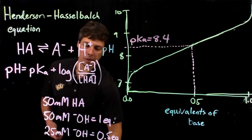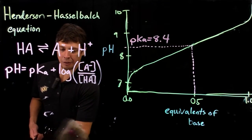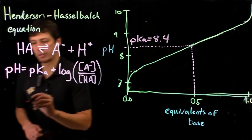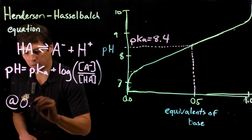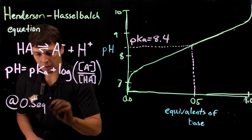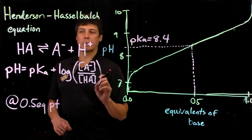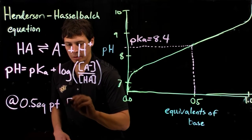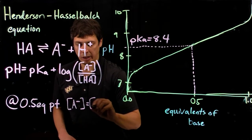That comes out in the math here, because at the half equivalence point, we've added enough base that A minus is equal to HA.